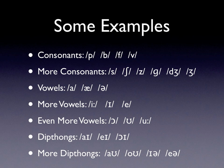Some examples. Here we have consonants. As you can see, those are fairly obvious — the first four: P, B, F, and M. More consonants — we have six of them: S, SH, Z, G, J, J.